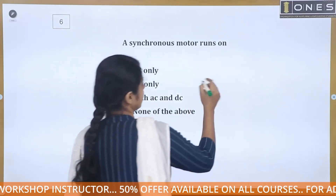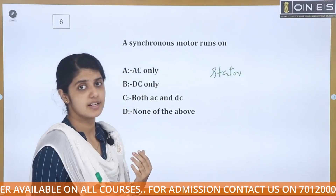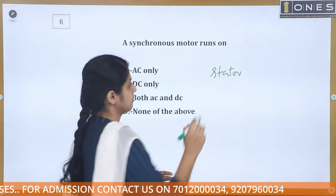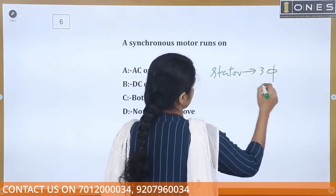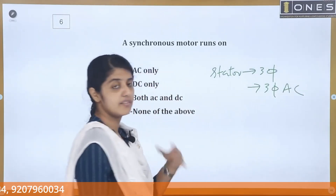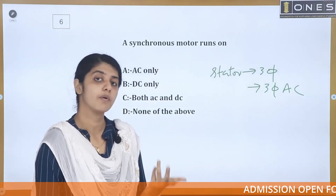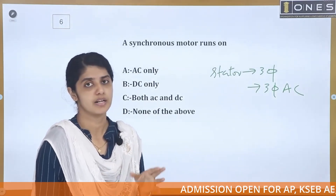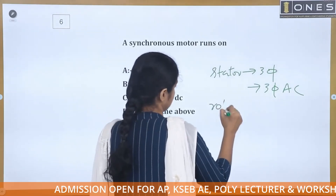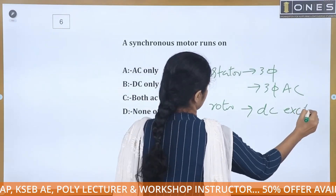The stator has three-phase windings. In these three-phase windings, we supply three-phase AC, and we get a rotating magnetic field. In this field we have rotor poles — north to south is a pole. The rotor has DC excitation, with poles arranged north to south.